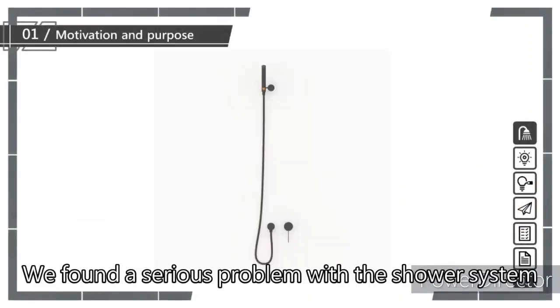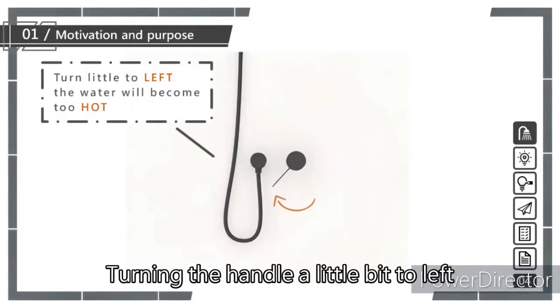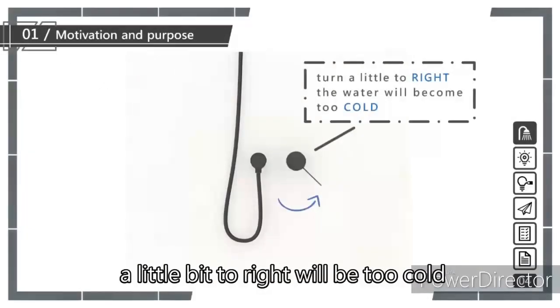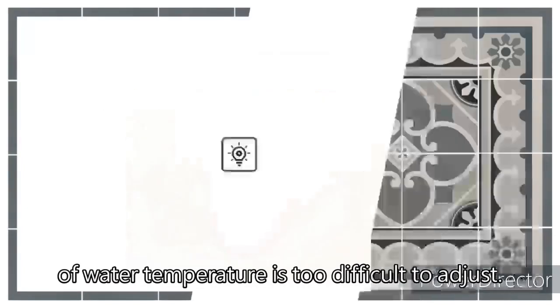Have you ever taken a shower? We found a serious problem with the shower system: the temperature adjustment is too rough. Turning the handle a little bit to the left, the water will be too hot. A little bit to the right, it will be too cold. We want to solve this problem of water temperature being too difficult to adjust.